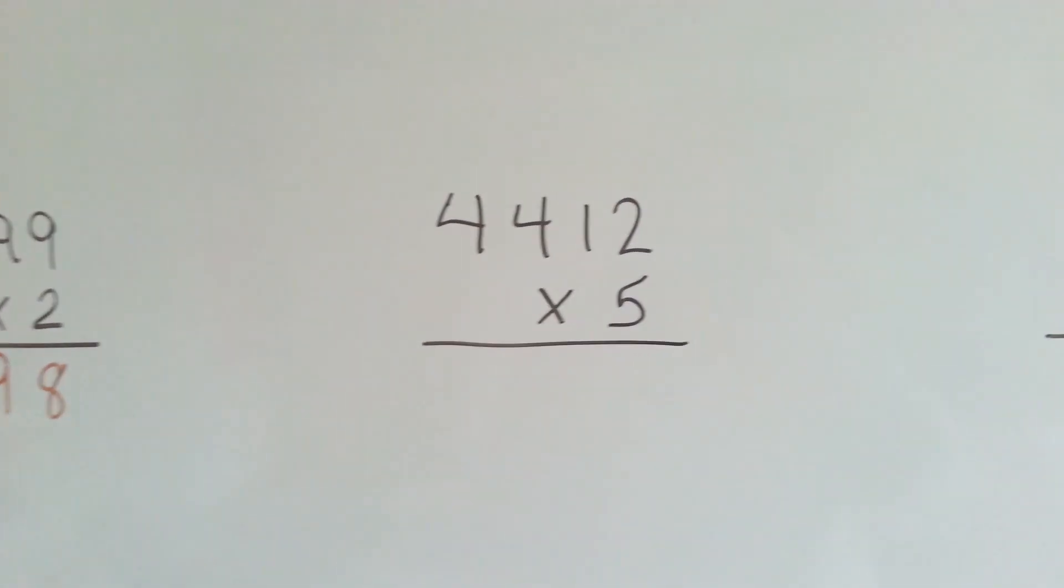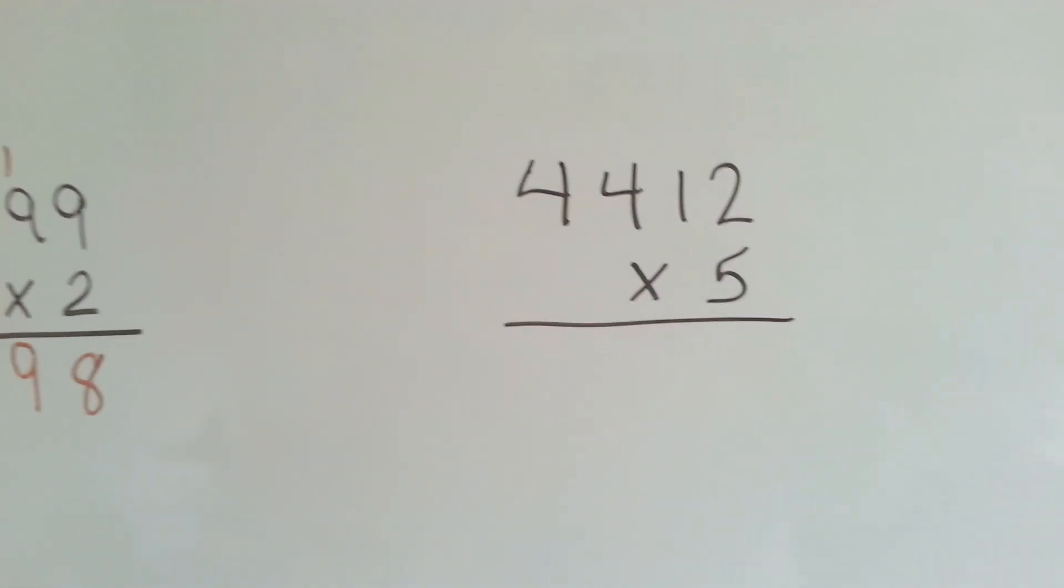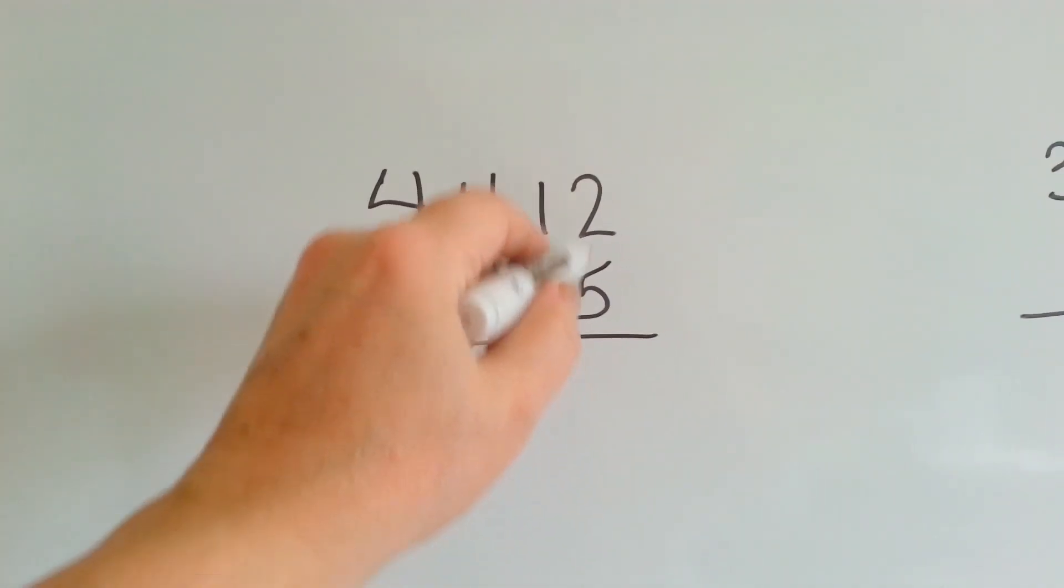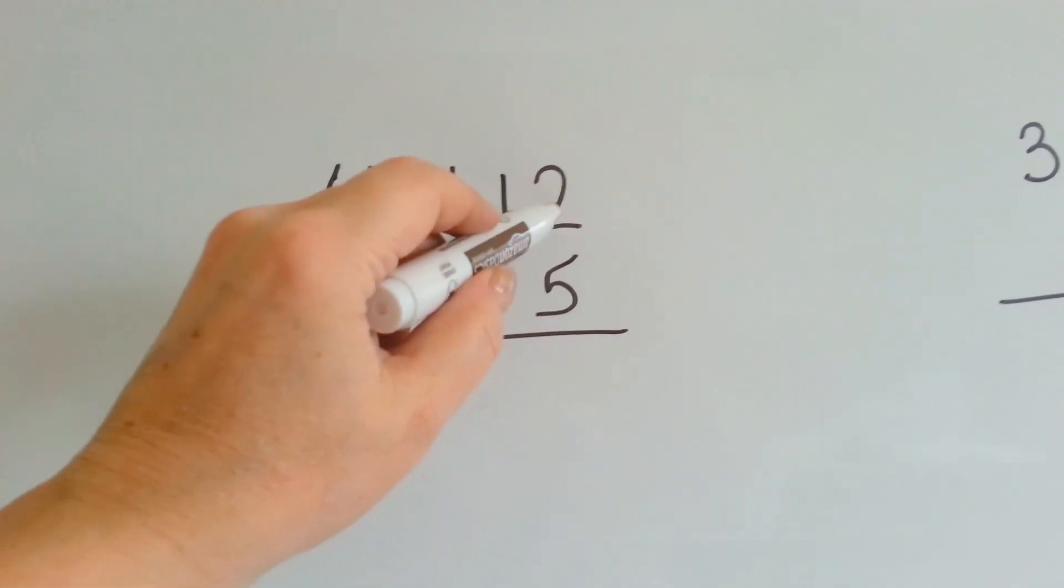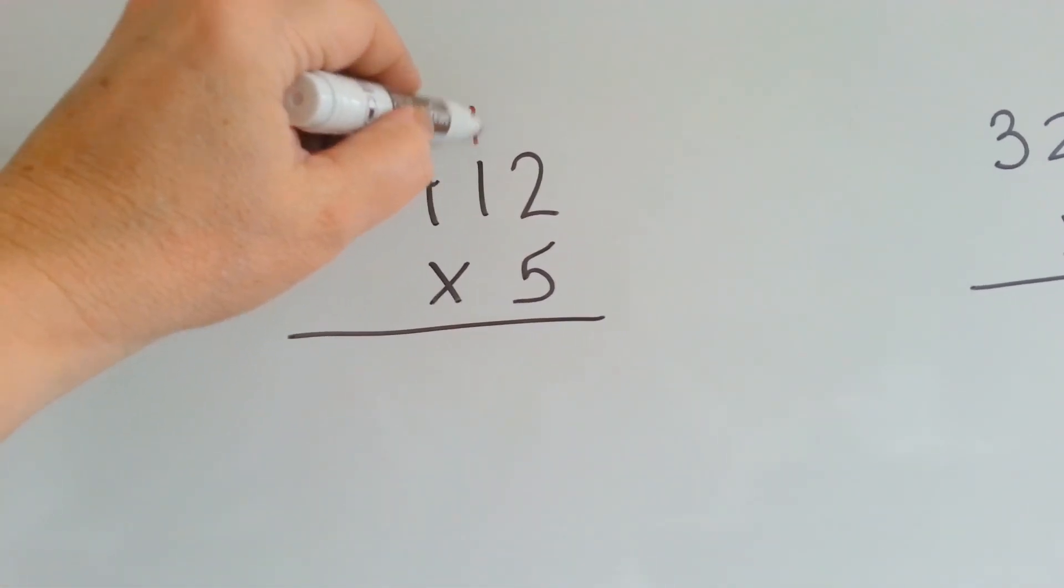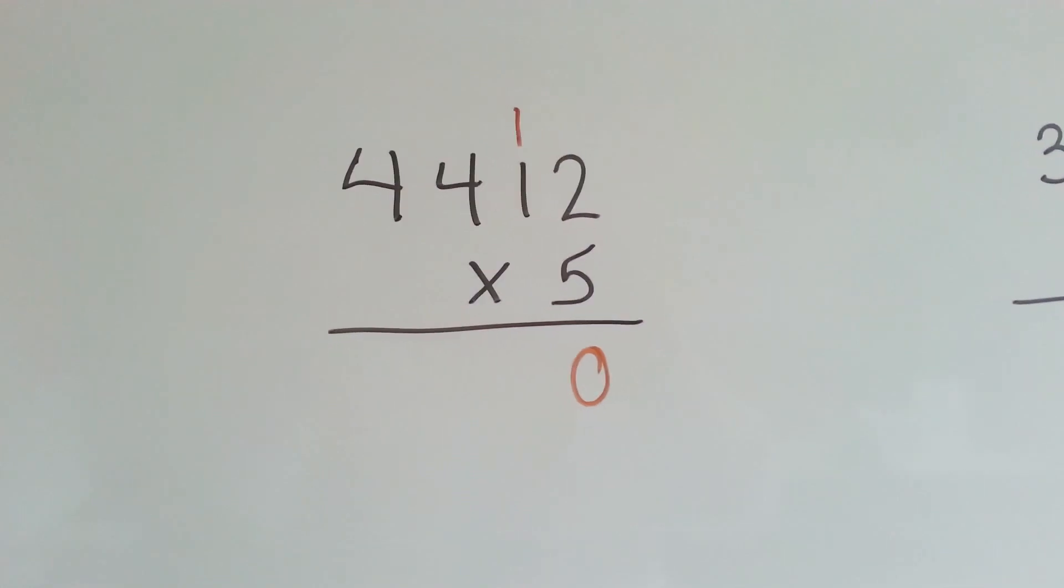Now we have a 4-digit number, and we're going to do the exact same thing. We start with the ones and slowly fan out and add our carryovers that are on the top. Here we go. 5 times 2 is 10. We carry over the 1 and put the 0 down.